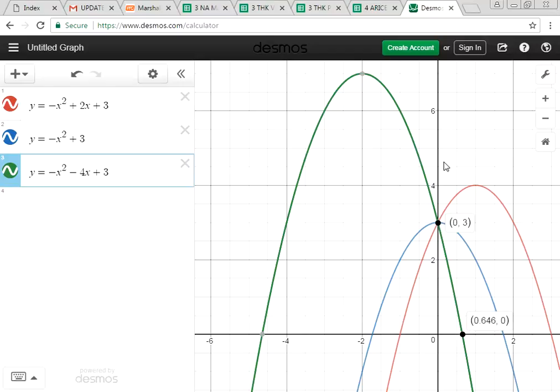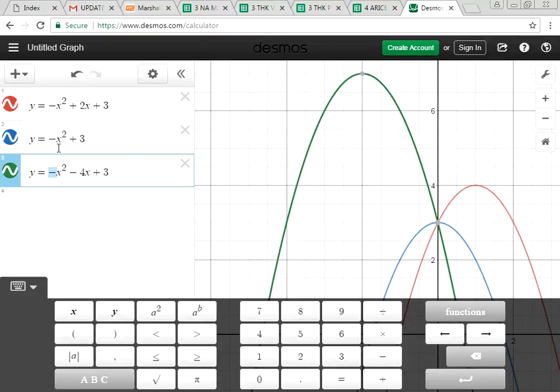What do you notice about all these three graphs? They have the same shape, parabola opening downwards. What is it about these three equations that gives us a parabola opening downwards? Your coefficient of x square. Notice that it is a negative number.